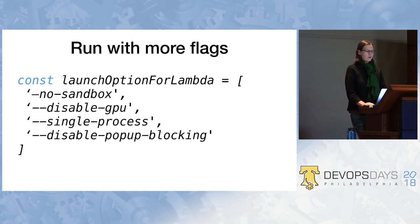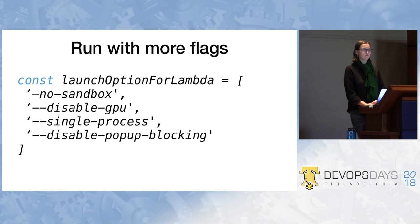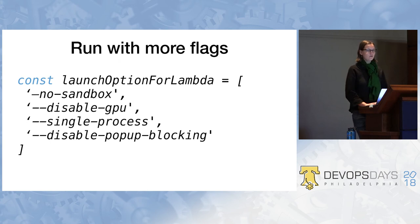You might say --no-sandbox. You want to say disable the GPU because Lambda does not provide GPU access and doesn't have any dependencies that GPU-using code might expect — that will crash. You might want to say single-process. And you probably want to tell the popup blocker not to worry about it, so that you can actually interact with those popups in your automation.